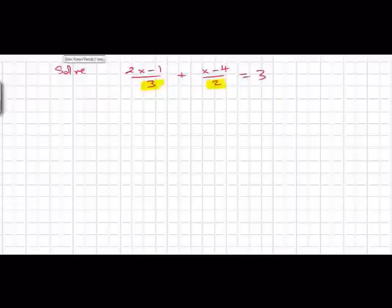The smallest number that both 3 and 2 divide evenly into is, quite obviously, 6.